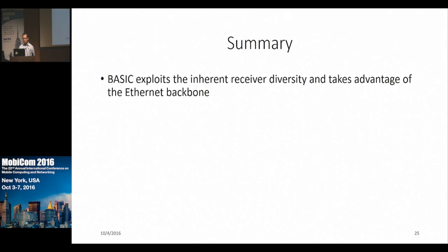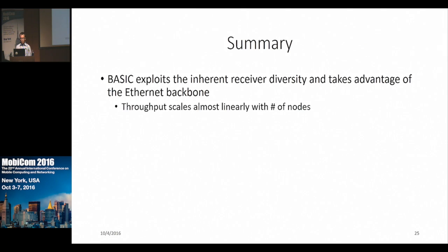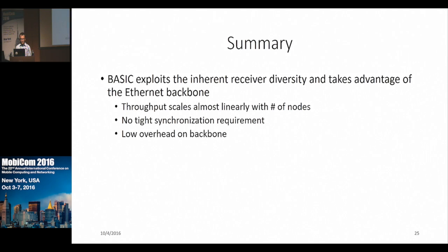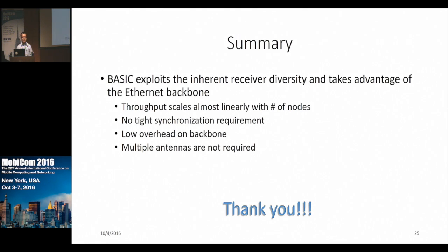In summary, we have proposed a MAC protocol that uses the inherent receiver diversity already available in Wi-Fi networks and takes advantage of the Ethernet backbone. Throughput scales almost linearly as the number of nodes increases. There is no need for tight synchronization among clients or APs, backbone overhead is very low because we only exchange decoded packets rather than samples, and there is no requirement for multiple antennas at the client or AP side. Thank you. I would like to take your questions now.